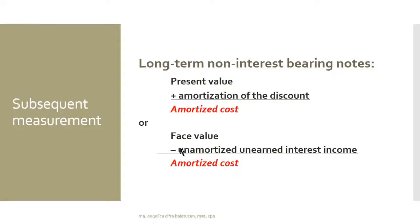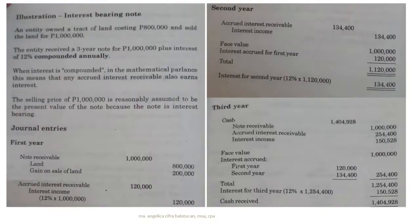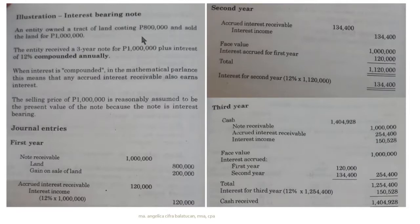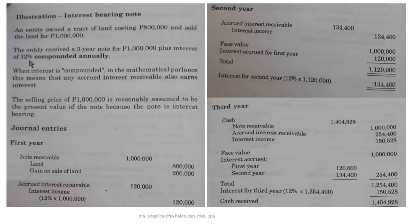Let's proceed to the examples in the book. An entity owns a tract of land costing 800,000 and sold the land for 1,000,000. So the value of the land when sold is 1,000,000, but in their records it was bought for 800,000. The entity received a three-year note for 1,000,000 plus interest of 12% compounded annually.